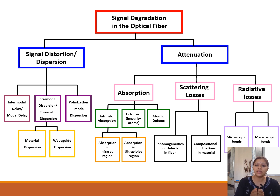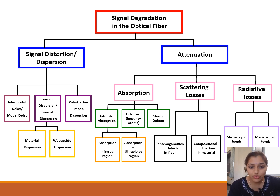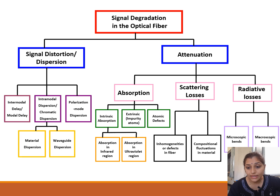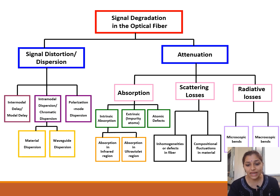When we bend our optical fiber cable, instead of total internal reflection, some part of the light gets refracted into the cladding. Absorption has three types: intrinsic absorption, extrinsic absorption, and atomic effects. Intrinsic absorption covers absorption in the infrared and ultraviolet regions. Radiative losses include microscopic bends — very small bends — and macroscopic bends, which are quite large. Scattering losses are due to inhomogeneities, defects, and compositional fluctuations in the material.